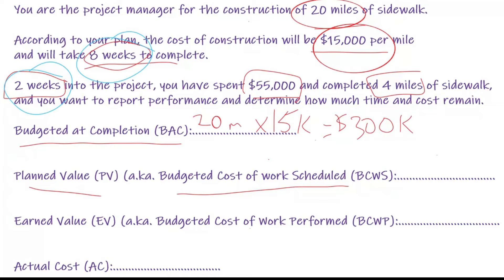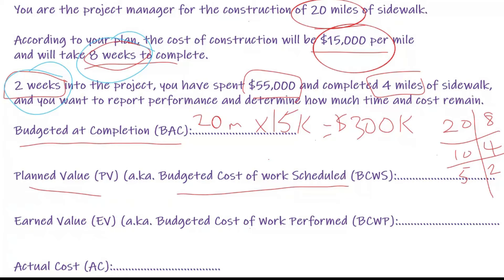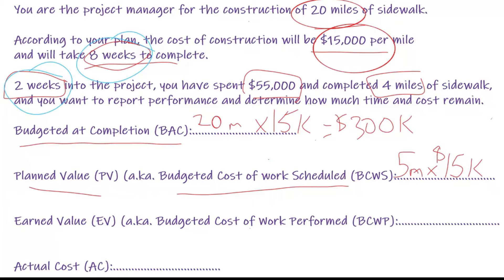There's more than one way to do this, but if in eight weeks we have to do 20 miles, then in four weeks we would do 10 miles, and in two weeks we should have done five miles. So five miles is my planned value, and at $15,000 per mile that comes to $75,000. What we're saying is that in two weeks I should have done five miles worth $75,000.